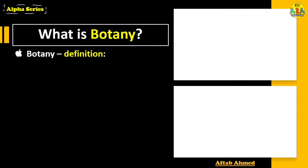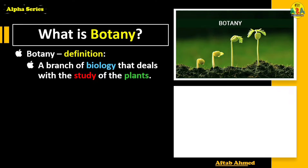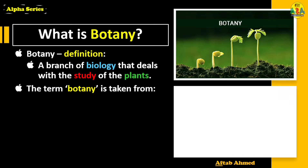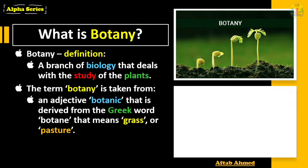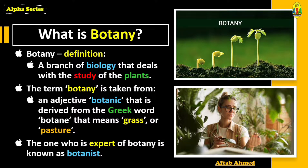What is botany? Let's see its definition first. Botany is a branch of biology that deals with the study of plants. Yes, only plants — no animals are involved in this study. The term botany is taken from an adjective 'botanic,' derived from the Greek word 'botane,' which means grass or pasture. The one who is an expert in botany is known as a botanist.